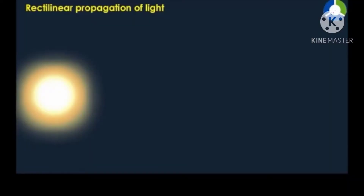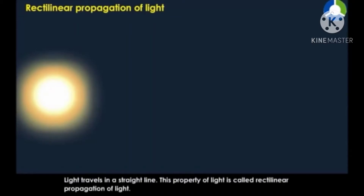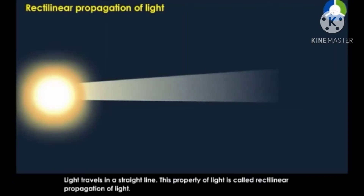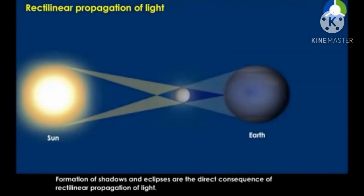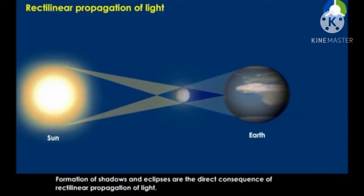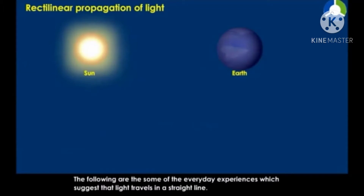Rectilinear propagation of light: light travels in a straight line, and this property of light is called rectilinear propagation of light. Formation of shadows and eclipses are the direct consequence of rectilinear propagation of light. The following are some everyday experiences which suggest that light travels in a straight line.